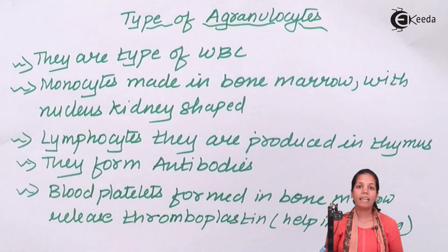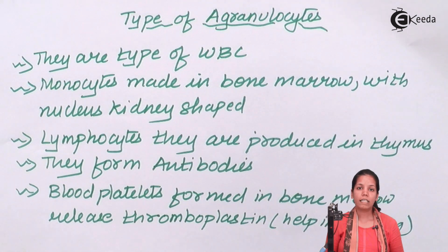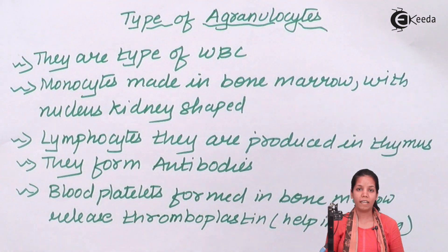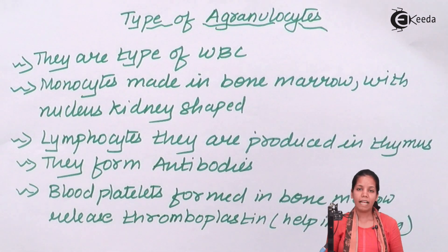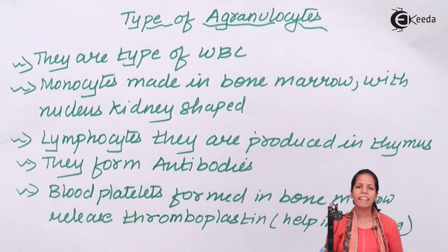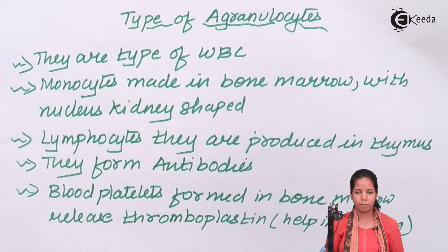If we talk about lymphocytes, they are the T cells of the body. They produce a high amount of antibodies inside the body. These antibodies are wide in shape and they trap bacteria or infection at their antigen binding site.